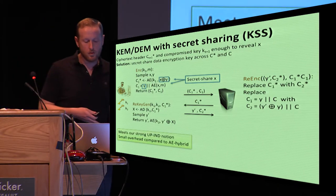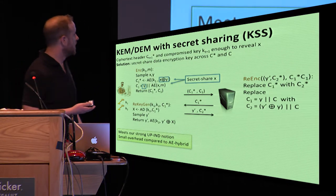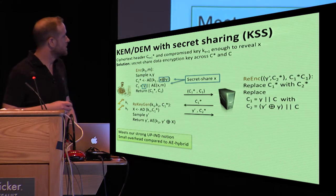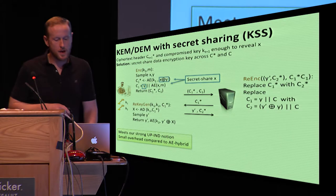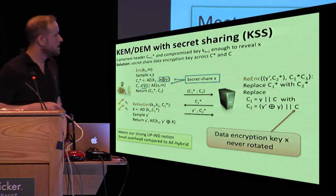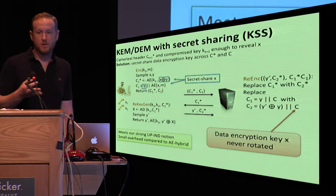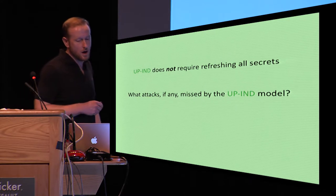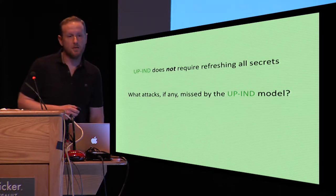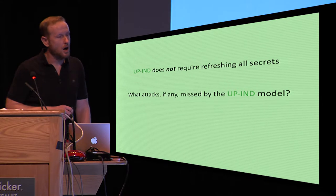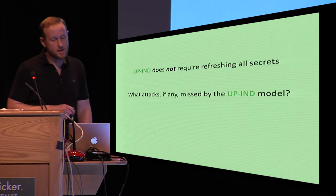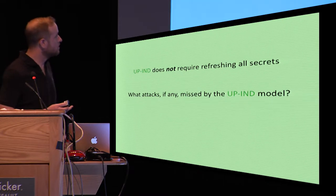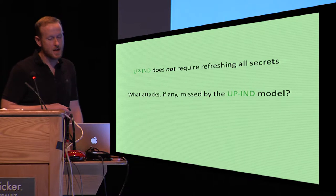So it turns out we can prove that this is up IND secure. And it really has a very small overhead compared to AE hybrid. It's just the addition of these small XORs that are, you know, say 128 bits. But note that the data encryption key here is still never rotated. So we're still kind of in the same fundamental place that X is never rotated. And this begs the question of what we're giving up basically by having schemes that say are just up IND secure and not refreshing all the secrets underlying ciphertext.